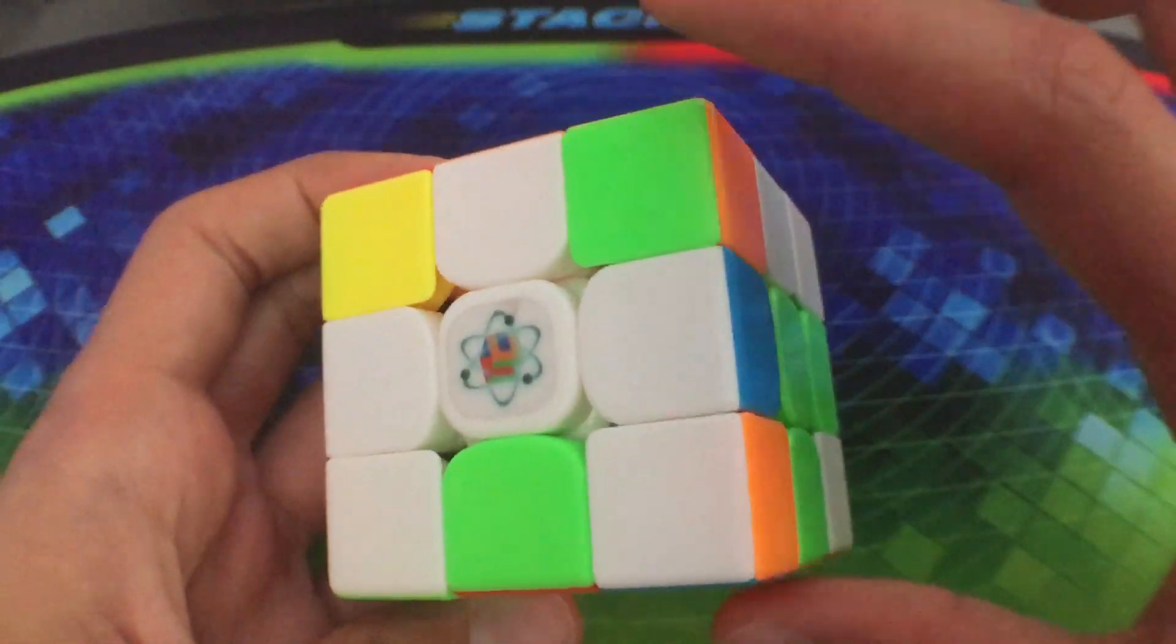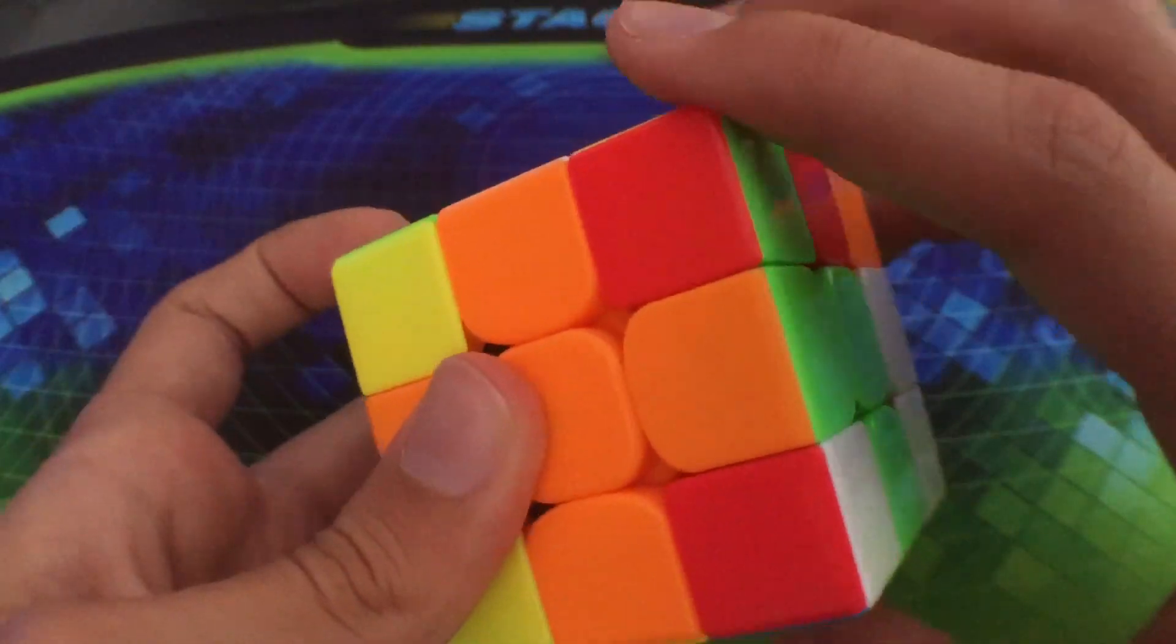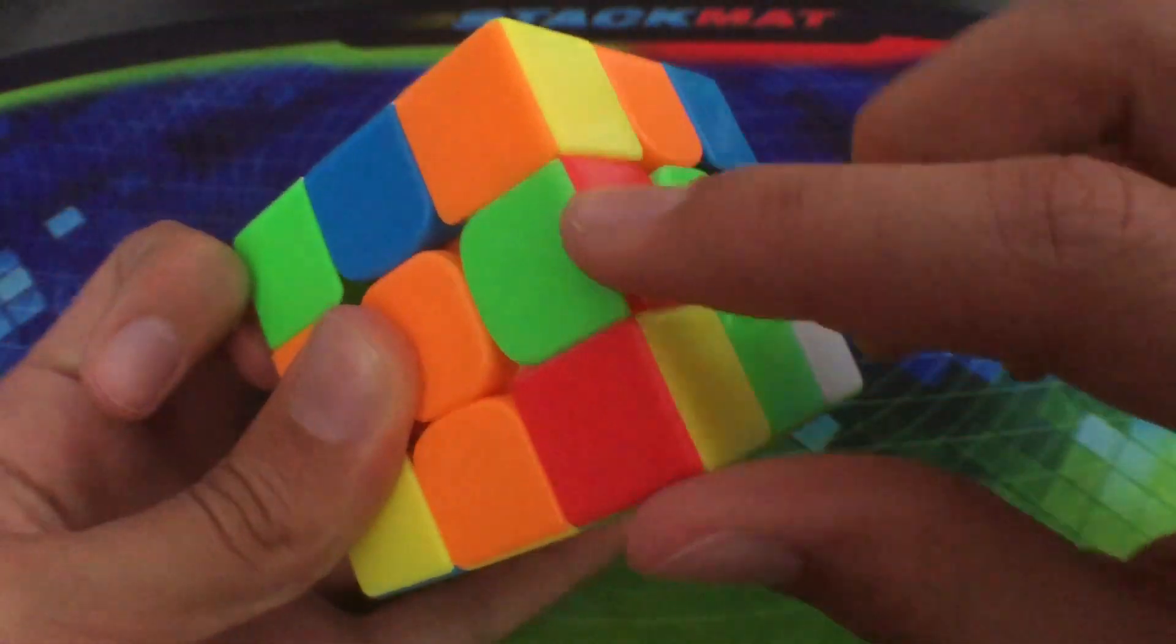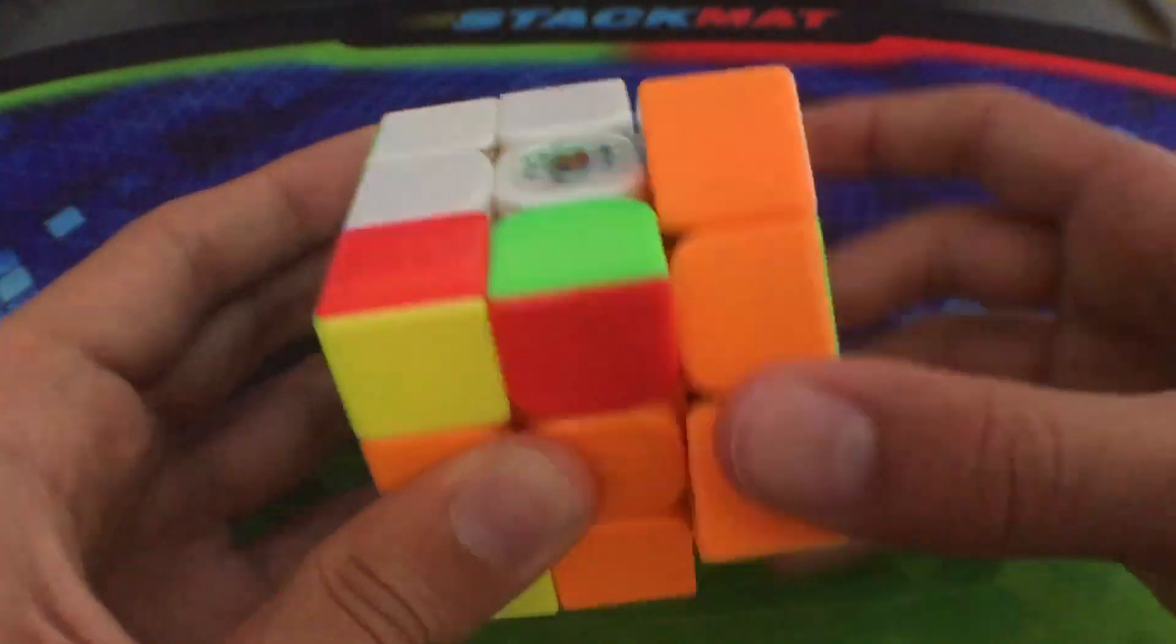So now my next pair was these two, so I just did a U2 and then I put this out to set it up for an easy insert. And while I was doing that I saw that this piece was connected, and so this would be an easy seven-move alg.